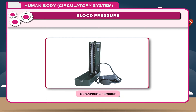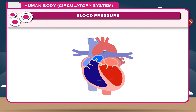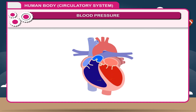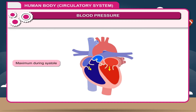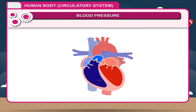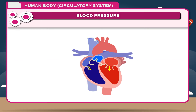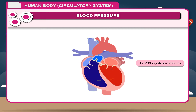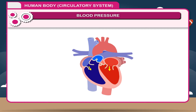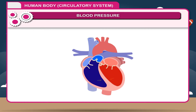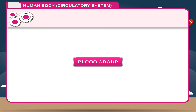Pressure is measured in millimeters of mercury by an instrument called a sphygmomanometer. During a single cardiac cycle or heartbeat, the blood pressure reaches maximum during systole and minimum during diastole. The blood pressure of a normal healthy person is 120/80 (systole/diastole). Very high and very low blood pressure are considered dangerous.